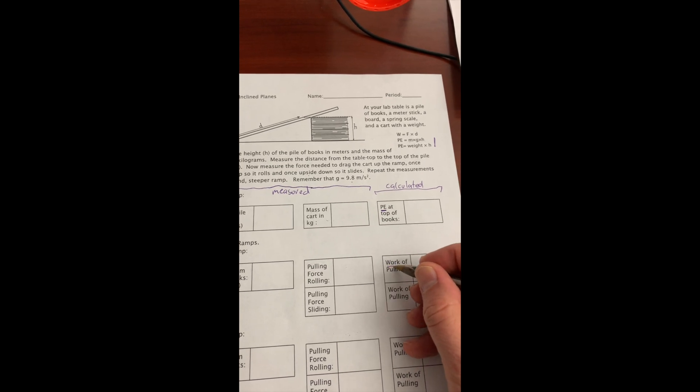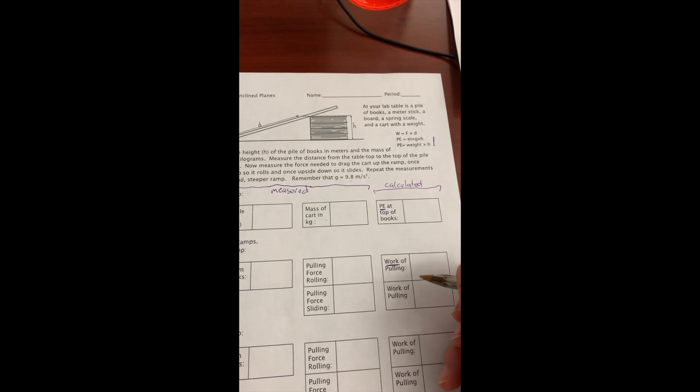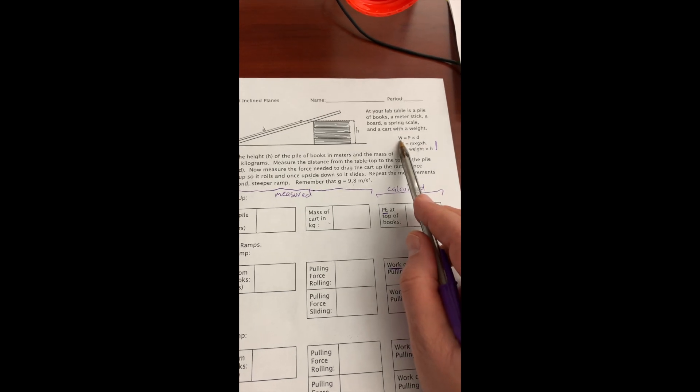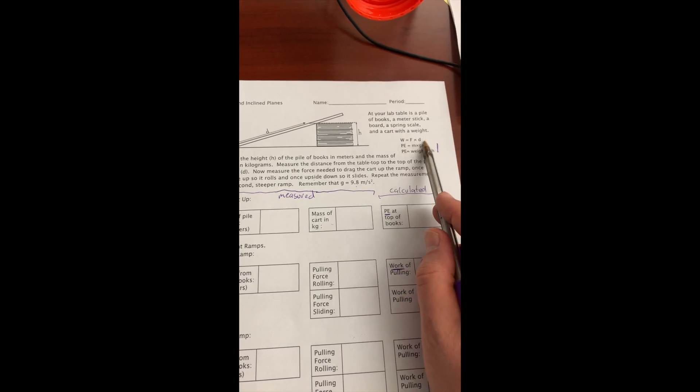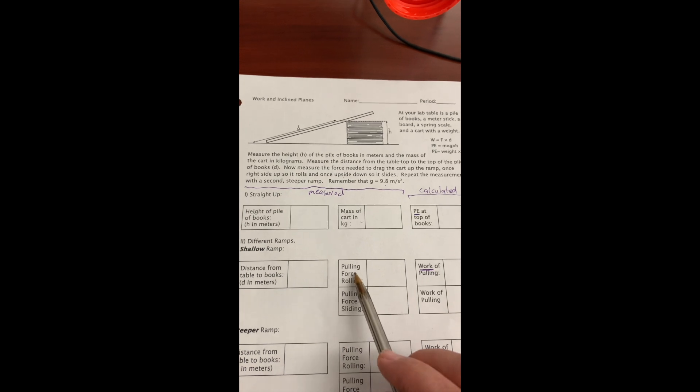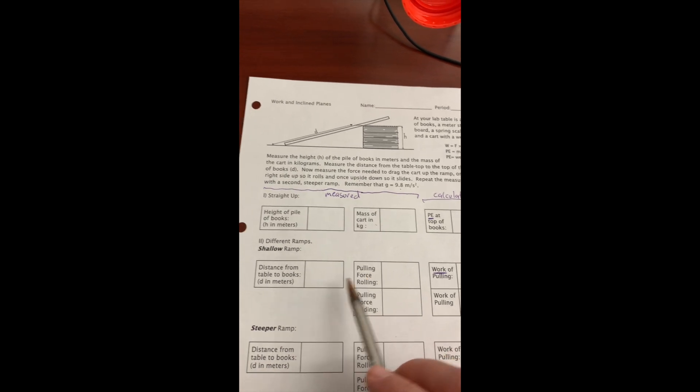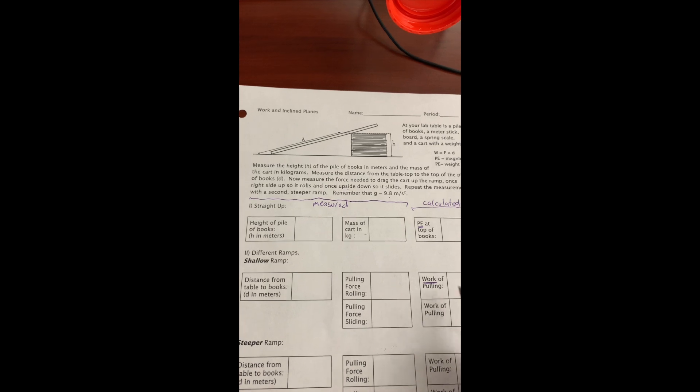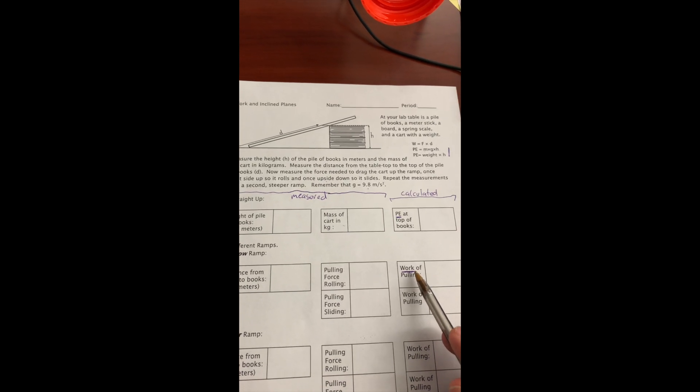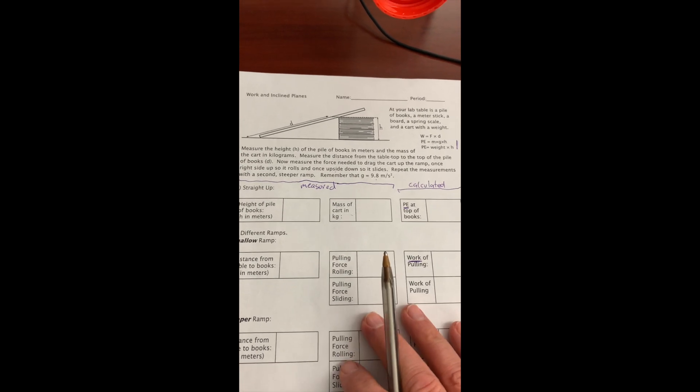Down here, it says you're calculating the work of pulling. Well, up here, we have our work equation, and it says force times distance. And again, you've got the force, and you've got the distance for each of these, so that you can calculate each of these works.